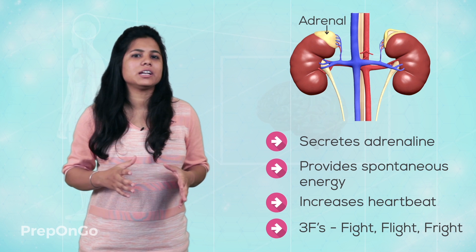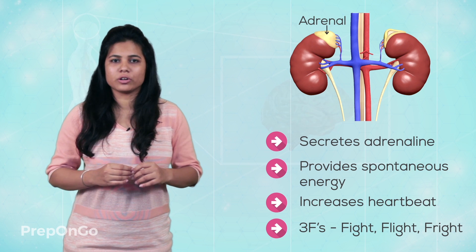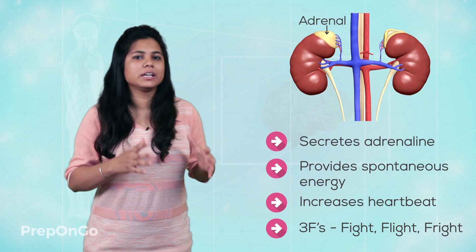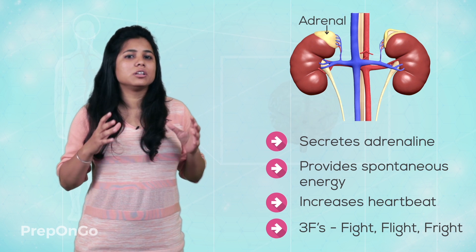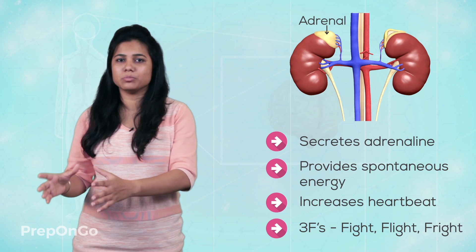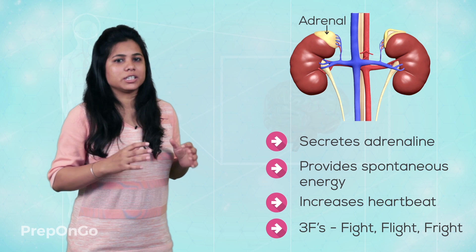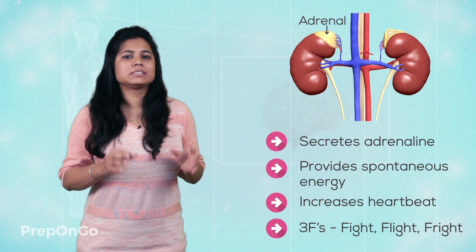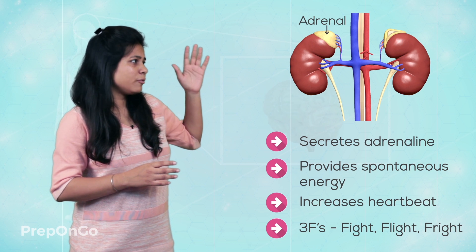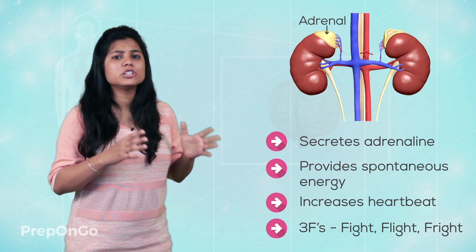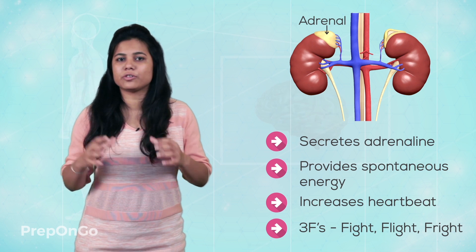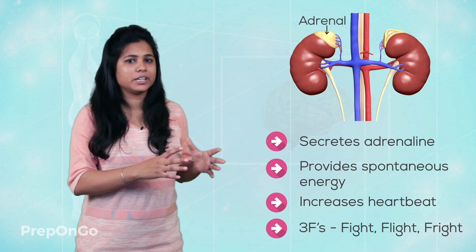Adrenaline is directly secreted into the blood, which reaches the target organ. The target organ of the adrenaline hormone is the heart, which is why the heartbeat increases and oxygen supply to the targeted organ increases. The breathing rate also increases due to the increased rate of blood supply. This hormone is also called the hormone of the three F's — fight, flight, and fright. In short, these hormones redirect the supply of oxygen and energy from different parts of the body toward the targeted part that needs to show activity.